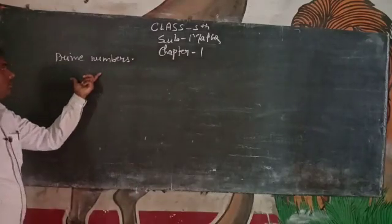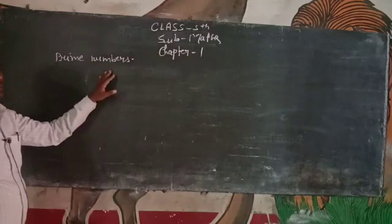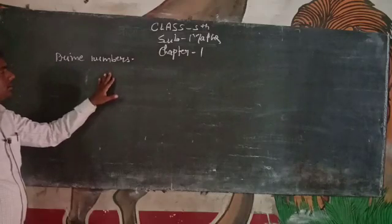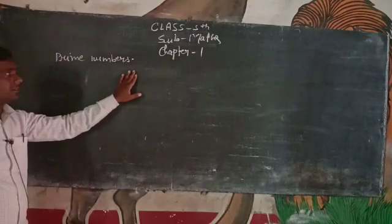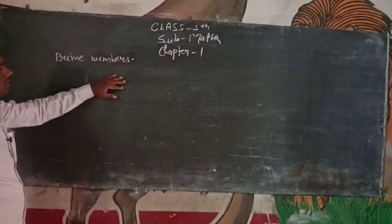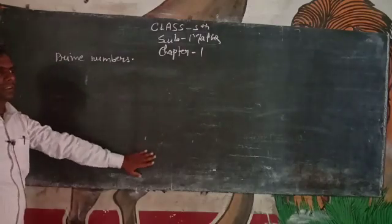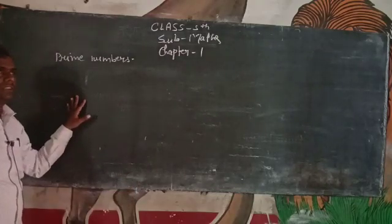Today we are going to study about prime numbers. What is prime numbers? Prime number is a natural number greater than one that is not a product of two natural numbers smaller than one. In other words, we can say,